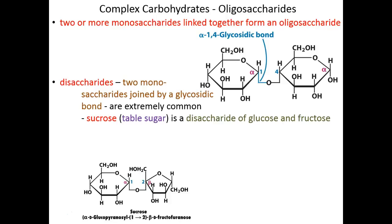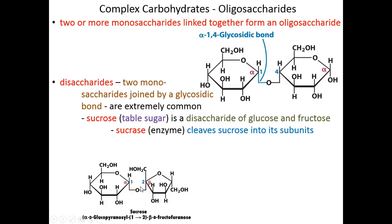In order to break sucrose up into its individual monomers, you need an enzyme that can cleave that O-glycosidic bond, and the enzyme that destroys sucrose is called sucrase. Sucrase is able to cleave this glycosidic bond and release glucose and fructose as individual monosaccharides that are then metabolized through the processes we'll begin talking about in the next lecture.